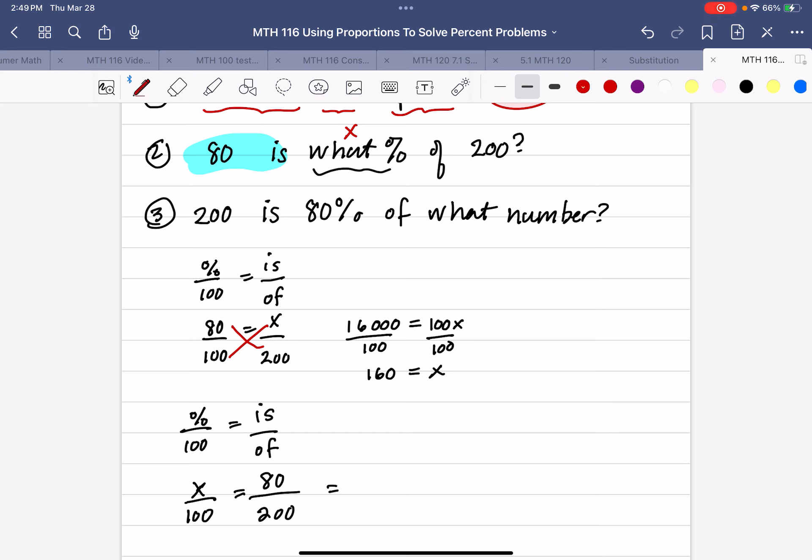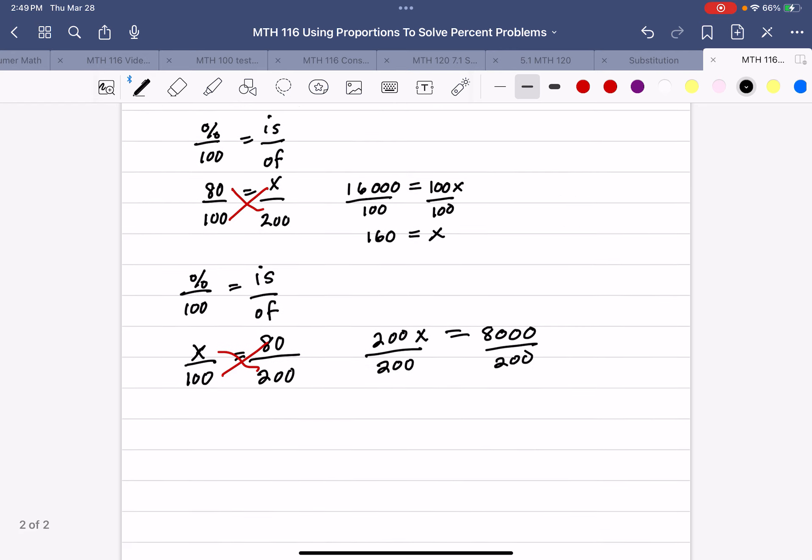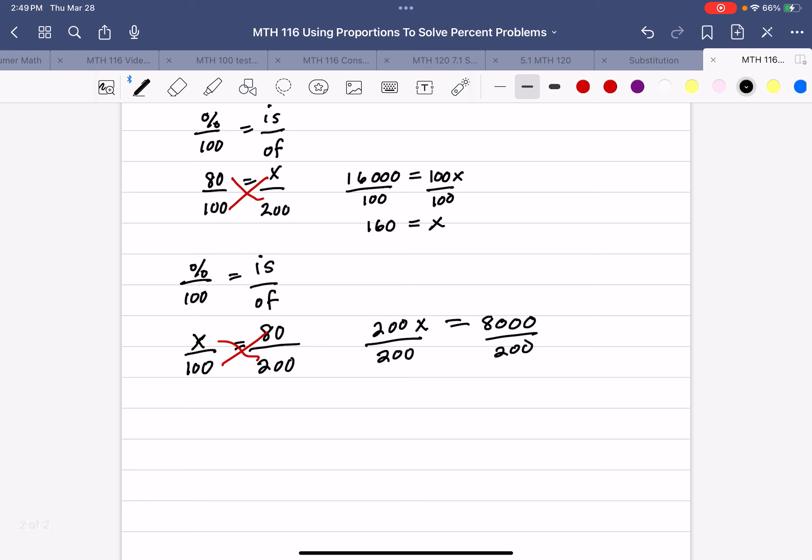So, we're going to cross multiply, top to bottom, top to bottom, and either order, 200x equals, and I don't need that equal sign, 200x equals 8,000.